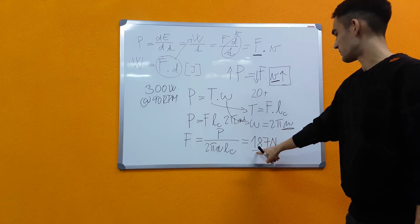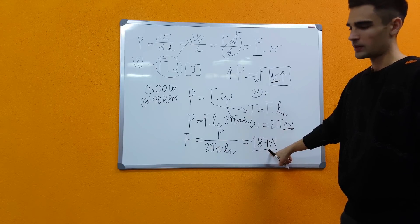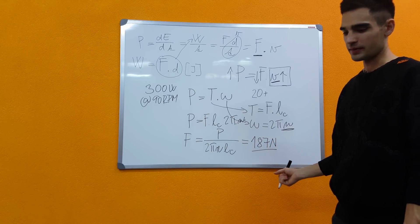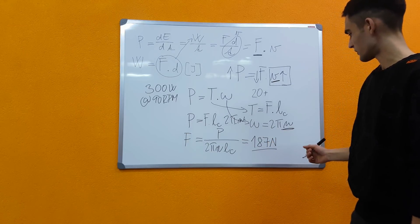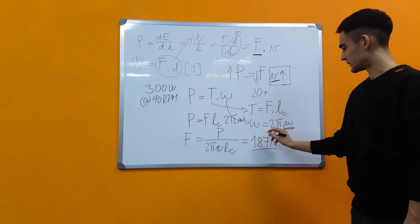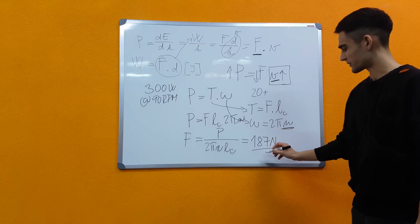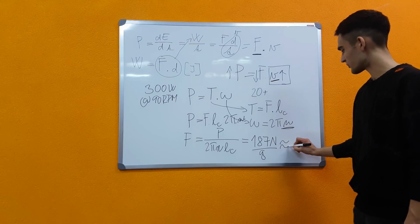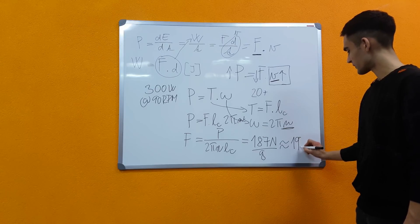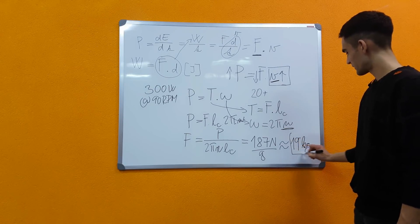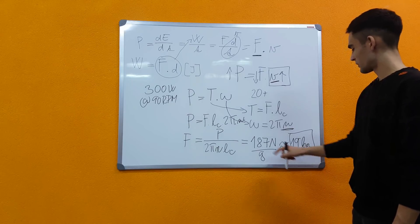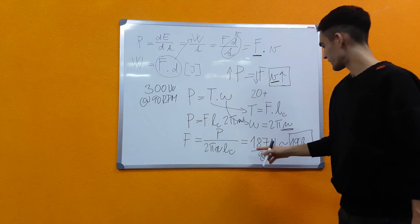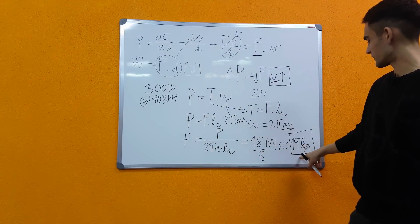Now this might sound like a lot, but then when we compare it to, for example, lifting something, it's actually not too much. If you divide this by the gravitational acceleration, so that's g, then we get that this equates to roughly lifting 19 kg. So the force you're putting out through both of your legs at this kind of power is only equivalent to lifting 19 kg.